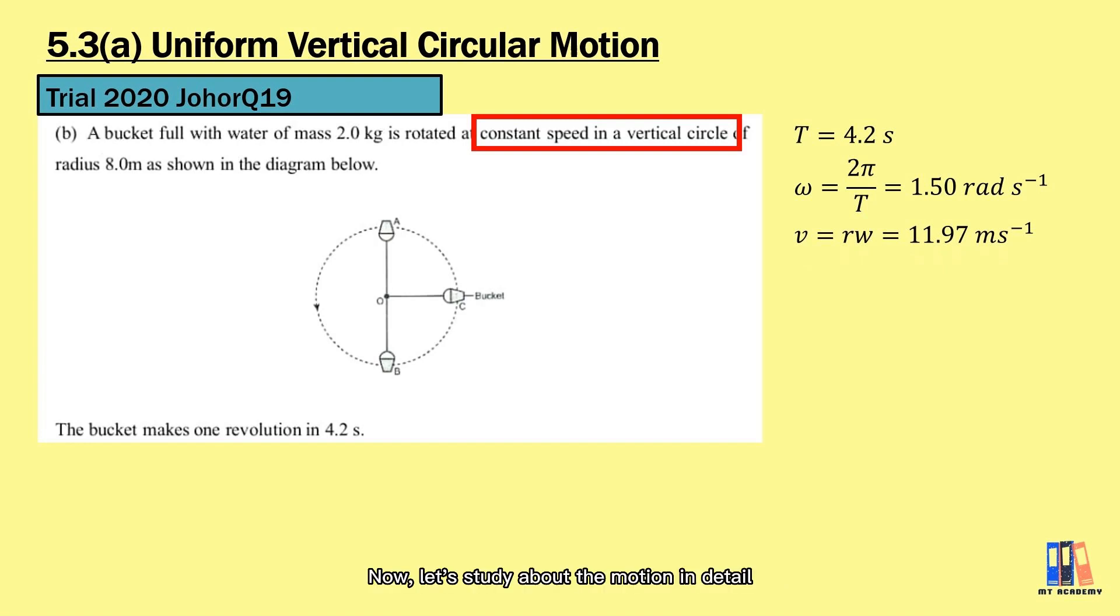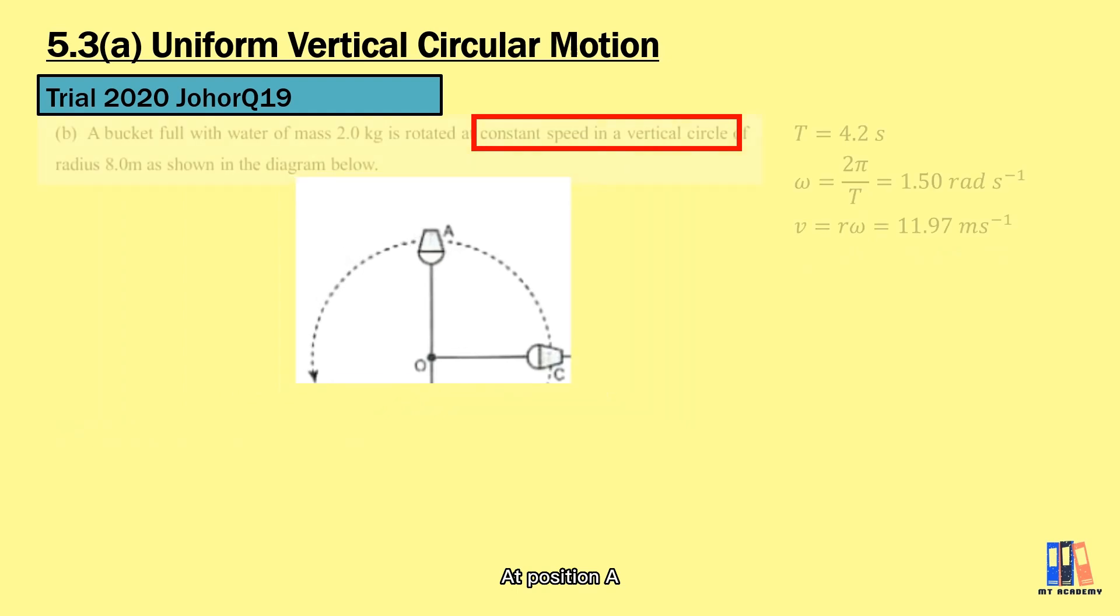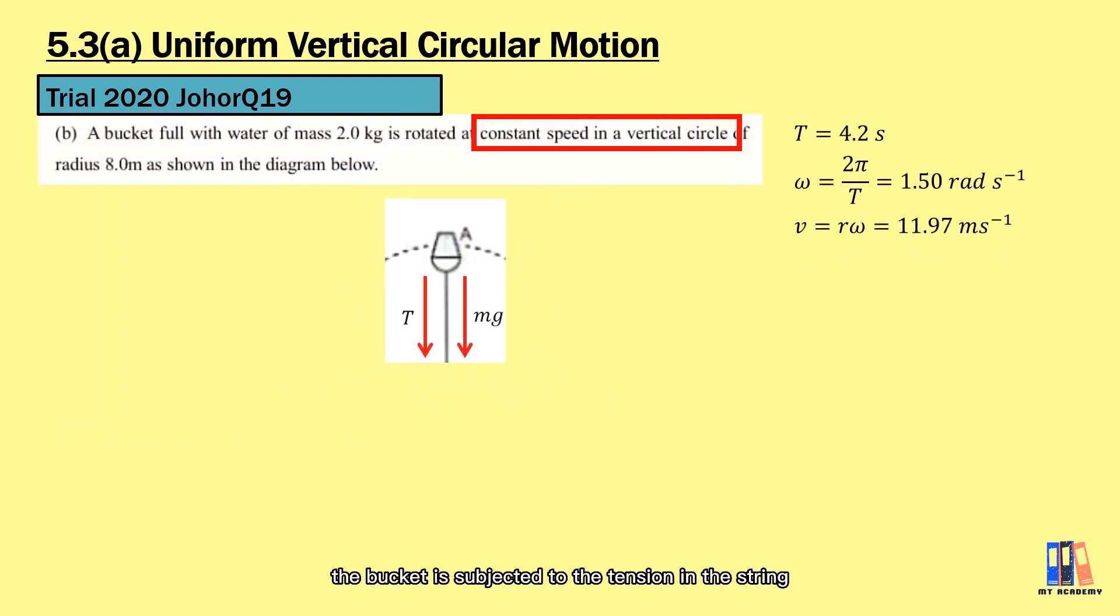Now, let us study the motion in detail. First of all, we have learned about the centripetal force that exists when the object is in circular motion. At position A, the bucket is subjected to the tension in the string and also the gravitational force. So here, we have the sum of tension and the weight is the centripetal force. Solving this equation can give us the value of the tension in the string is 16.29 N.